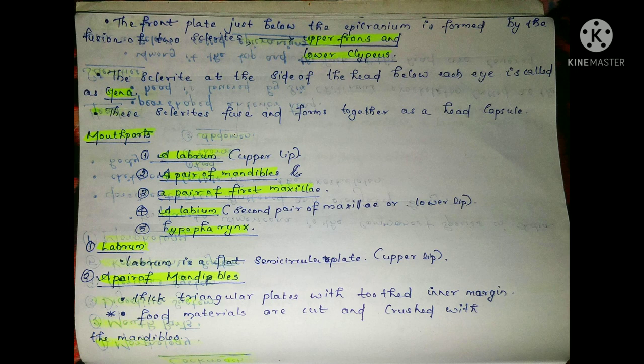The second mouth part is a pair of mandibles. One pair of mandibles is present. They are thick, triangular plates. Their function is to cut and crush food. They are called mandibles.